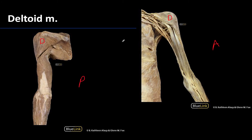It starts off wider and then begins to taper off distally to almost a point, and it will distally attach on the humerus a little bit above the mid-shaft region.